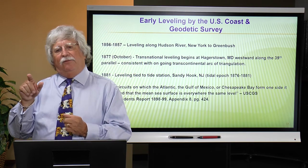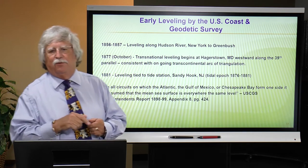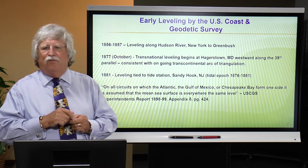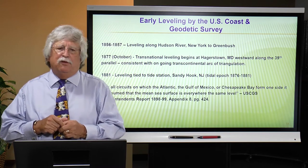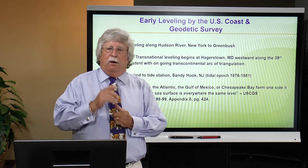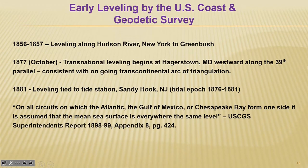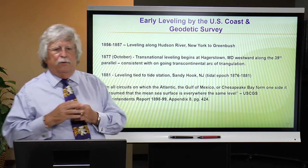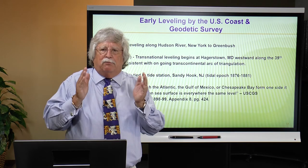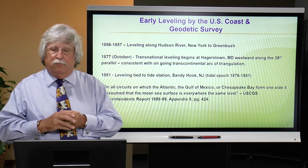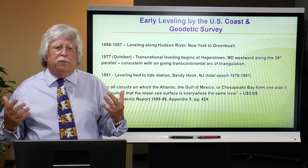They began this process of leveling across the country. In 1881, they tied that leveling into the national tidal reference system by connecting to one of the longest-term tide stations in the United States at Sandy Hook, New Jersey. Notice that epoch — 1876 to 1881 — that's five years. Those who work in tidal datums will tell you what you really want is a minimum of 18.6 years, referred to as a metonic cycle. Every 18.6 years, the Earth, Sun, and Moon repeat a particular pattern that lets you model out the effects of large storms or other influences.